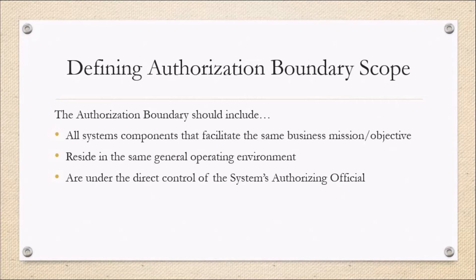In application, when we're defining the scope of an authorization boundary we should include three things in our consideration: all system components that facilitate the same business and mission objective, that reside in the same general operating environment, and are under the direct control of the system's authorizing official. If it meets those three criteria, then it could be included within the authorization boundary. This may not always be a totally black and white distinction and there will have to be a conversation with stakeholders, but these three components, if met, should be a pretty strong case for inclusion.